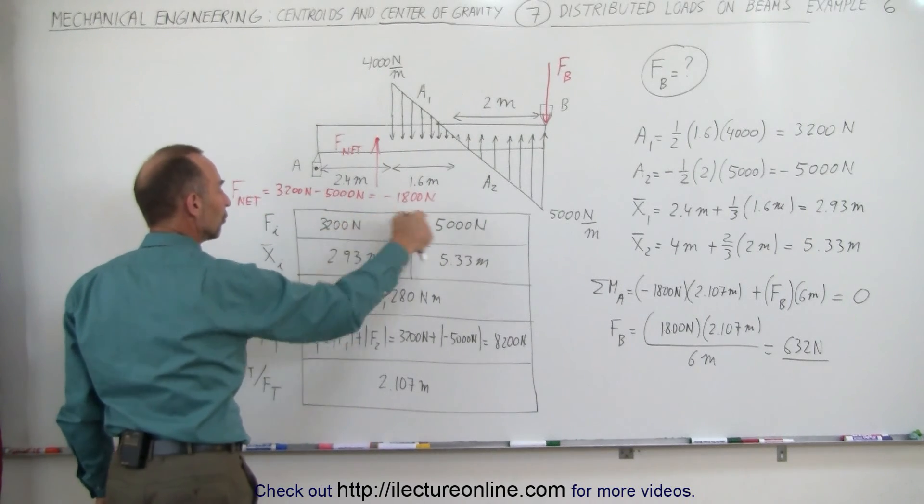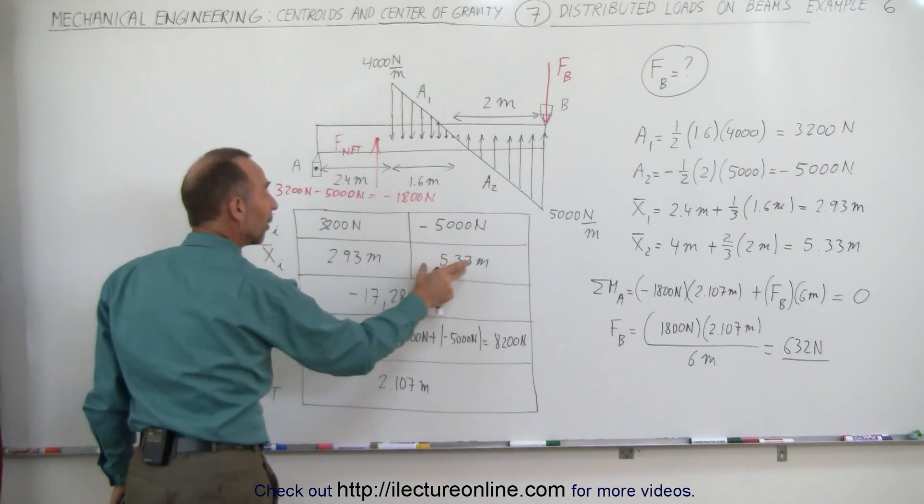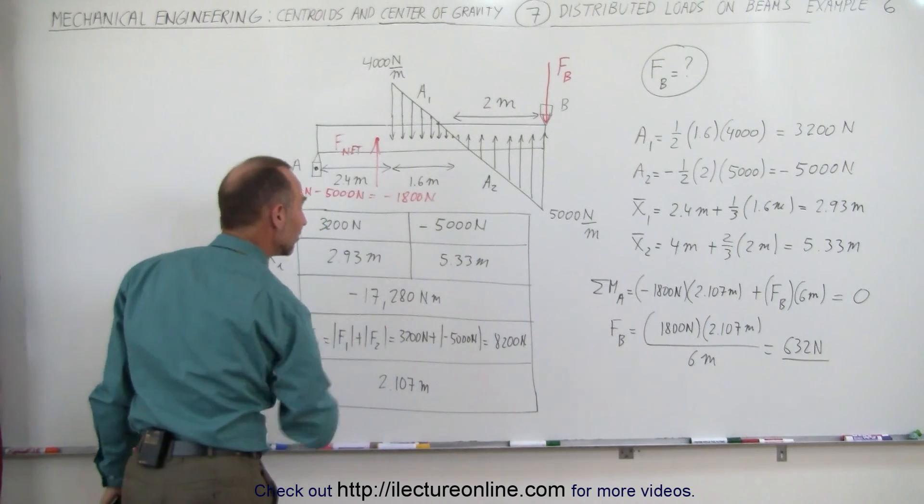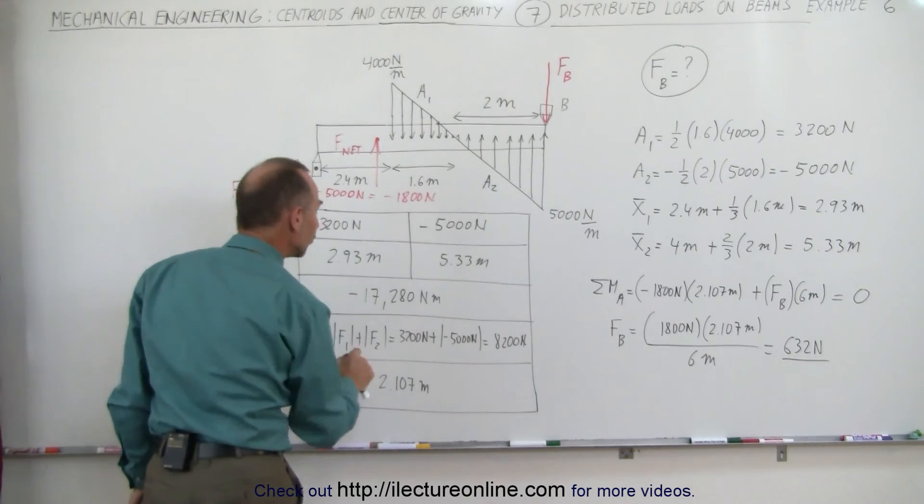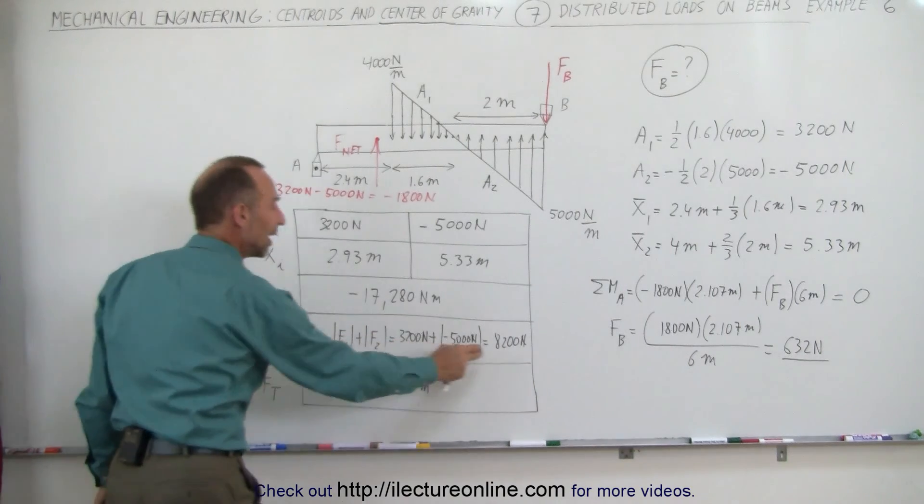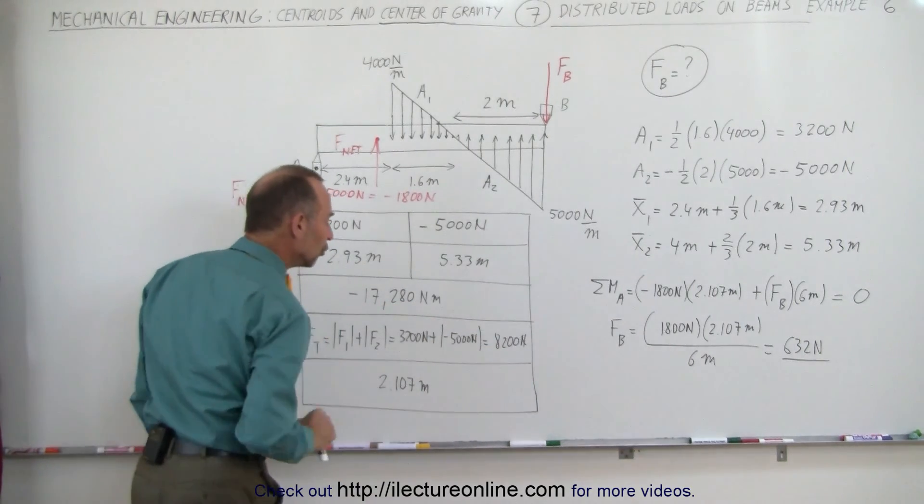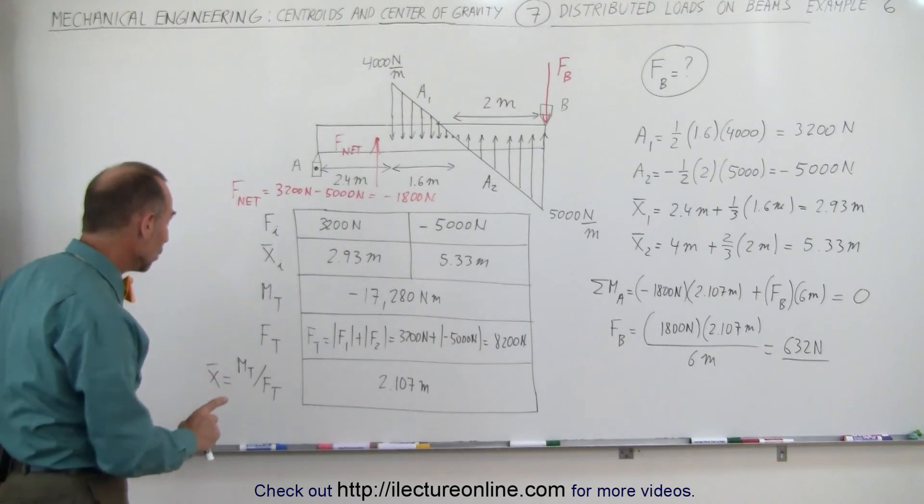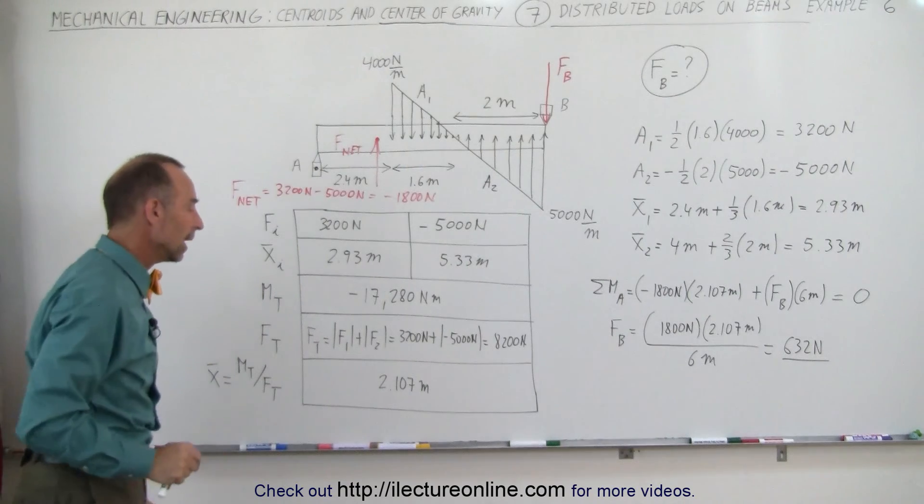We multiply the total forces times the x-coordinates of the centroids of the two segments to get the total moment about A. We then add up all the forces, but we add up the total magnitude of the force, the absolute value. We divide this number by this number and we get a total distance of 2.107 meters. Again, we want a positive value. We know that the value is to the right of point A.